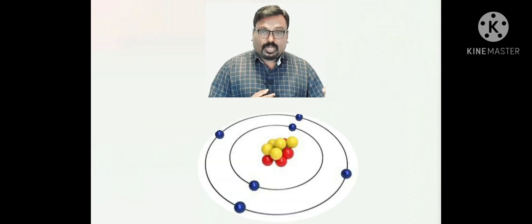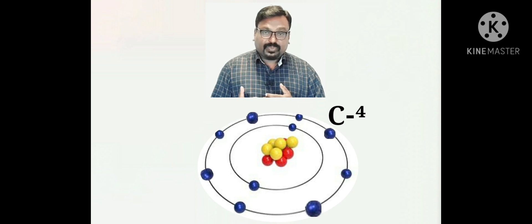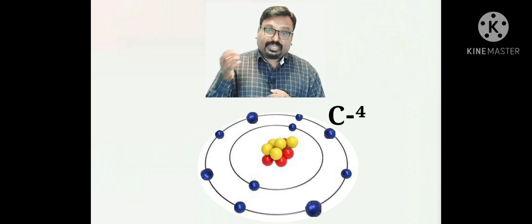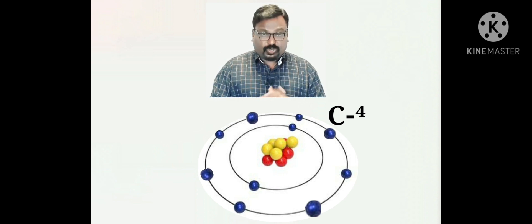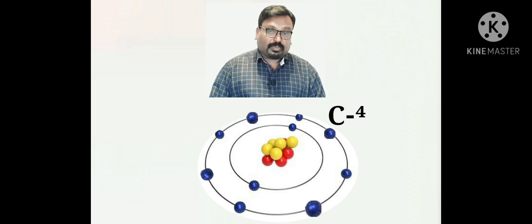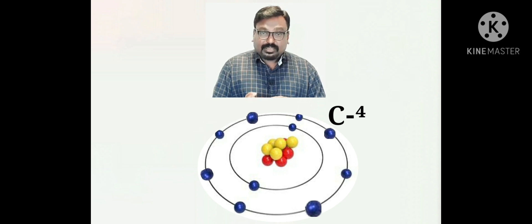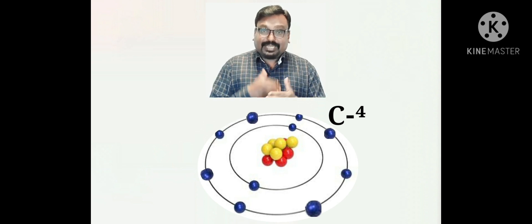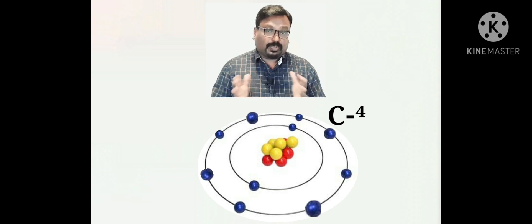If carbon gains four electrons, there will be a net increase in negative charge, meaning carbon would become an anion. If it gains four electrons there will be a total of ten electrons, or ten negative charges, but in the nucleus of carbon there are only six protons. It is difficult for a nucleus with six protons to hold ten electrons, so gaining electrons to achieve the octet configuration is impossible for carbon.